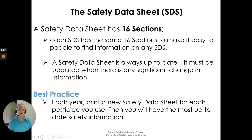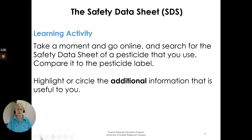As a best practice each year, print a new Safety Data Sheet for each pesticide that you use, and then you will have the most up-to-date information handy. You can go online, search for the Safety Data Sheet of a pesticide that you use, compare it to the label, and highlight and circle any additional information that is useful.